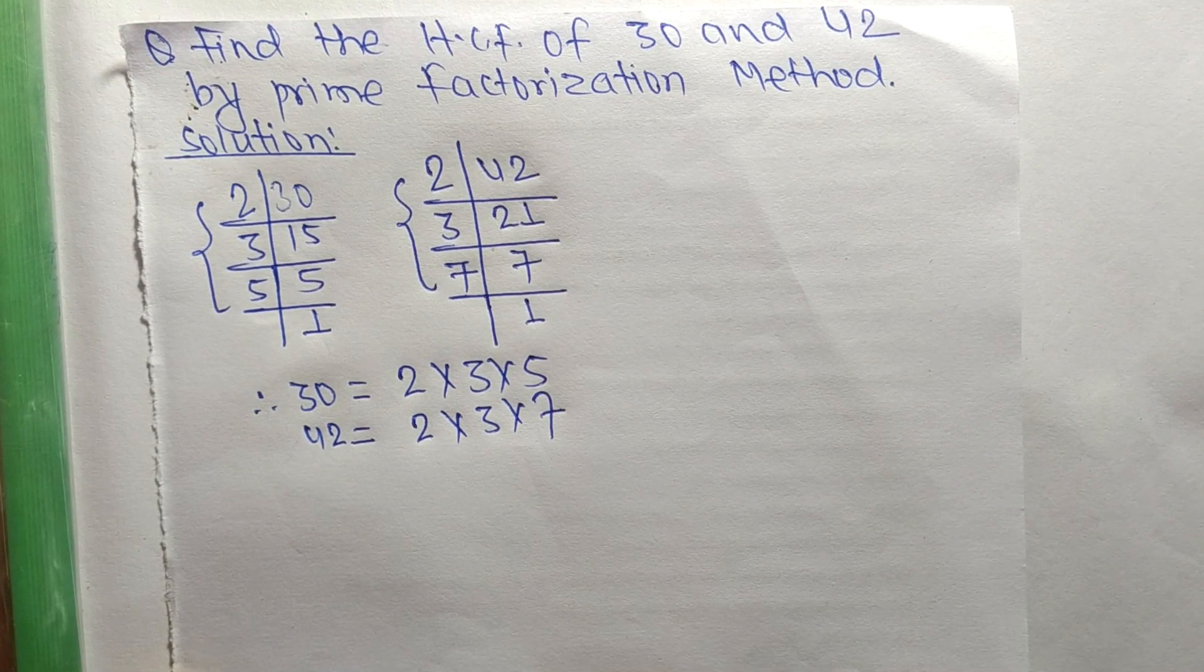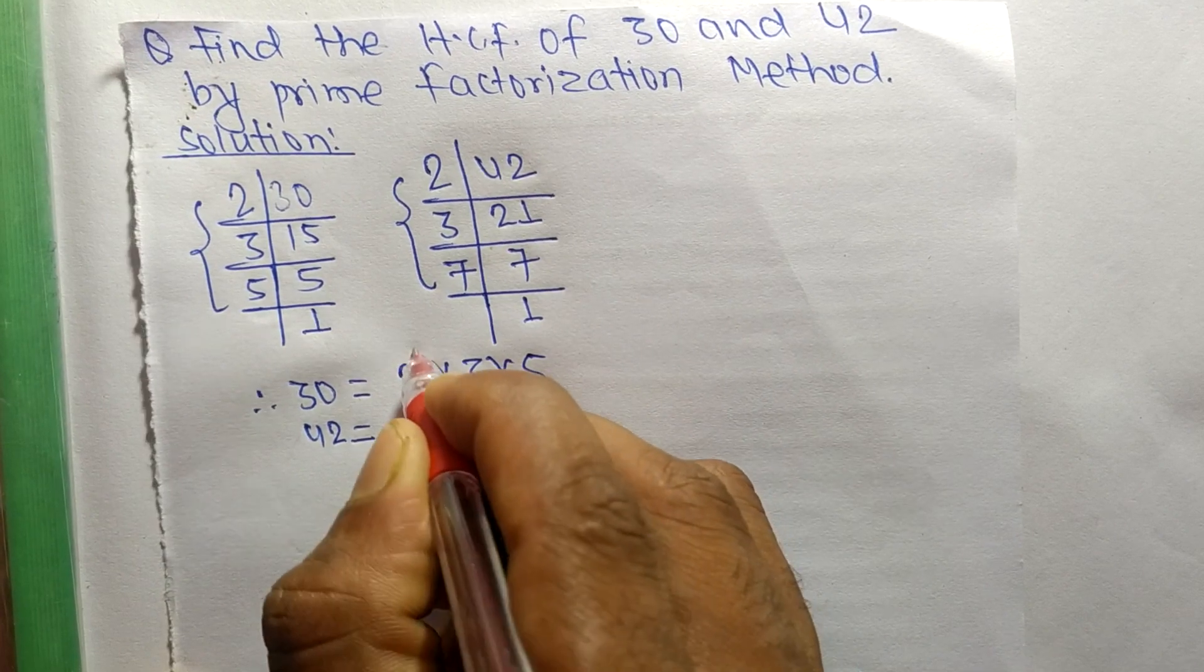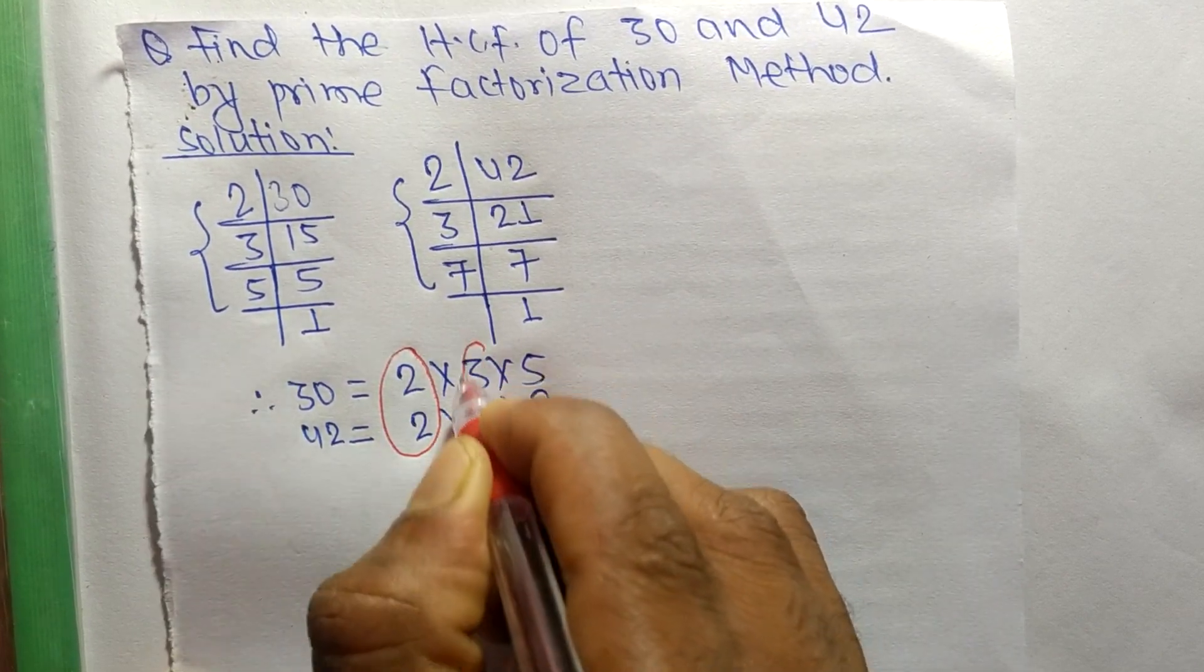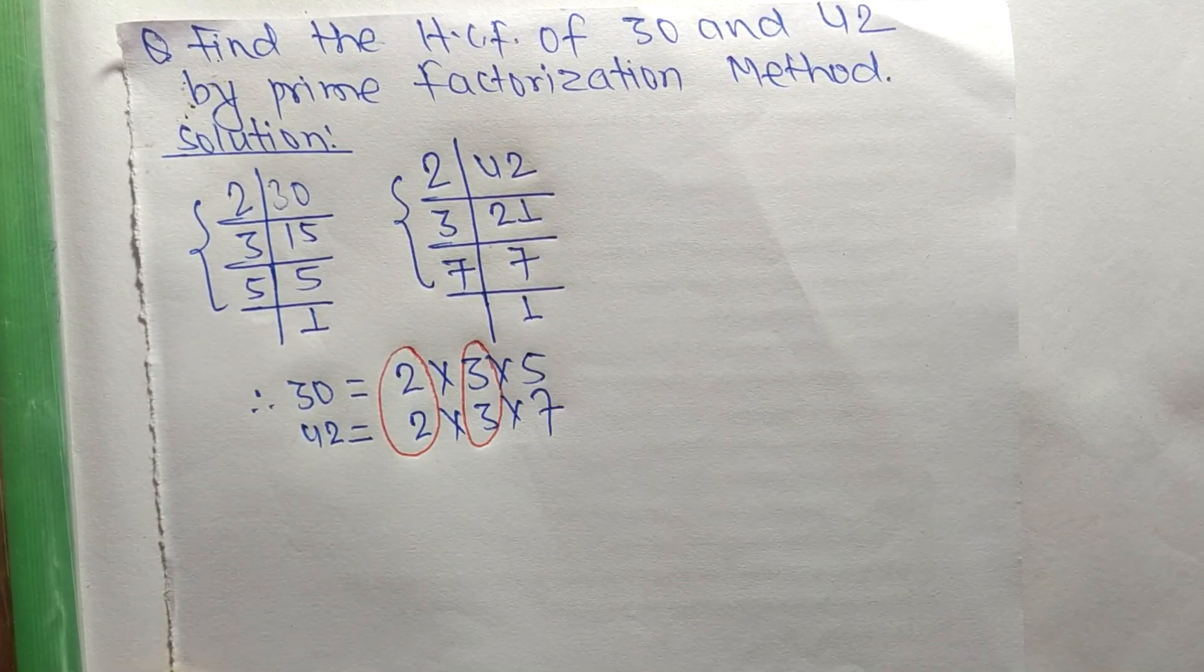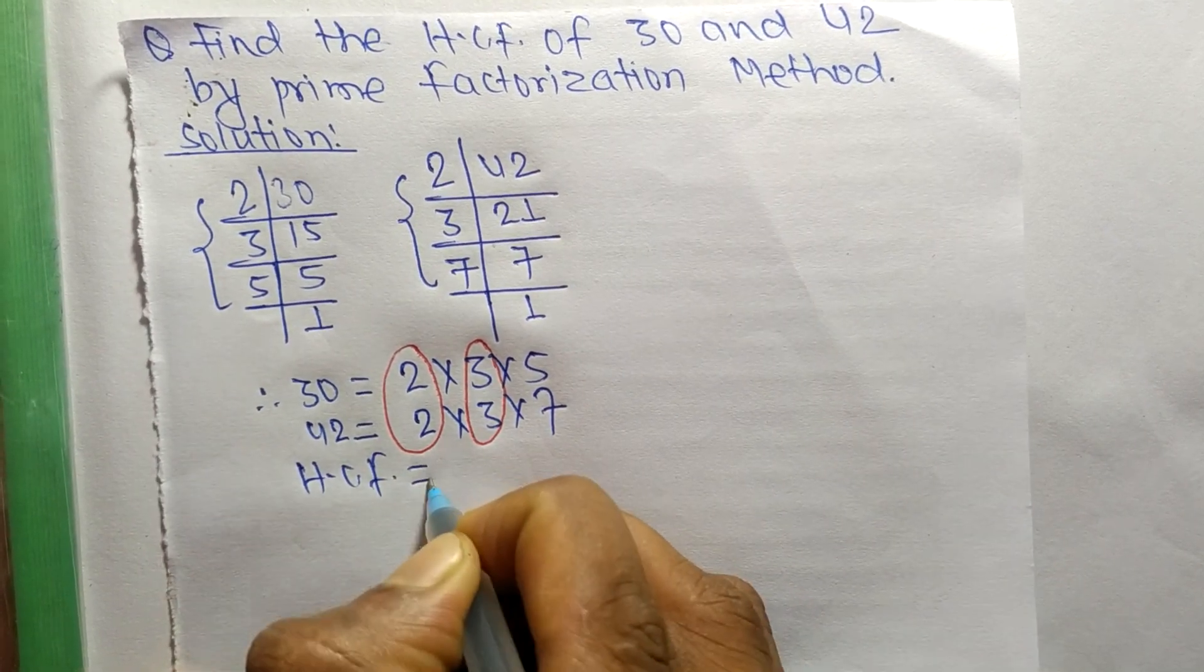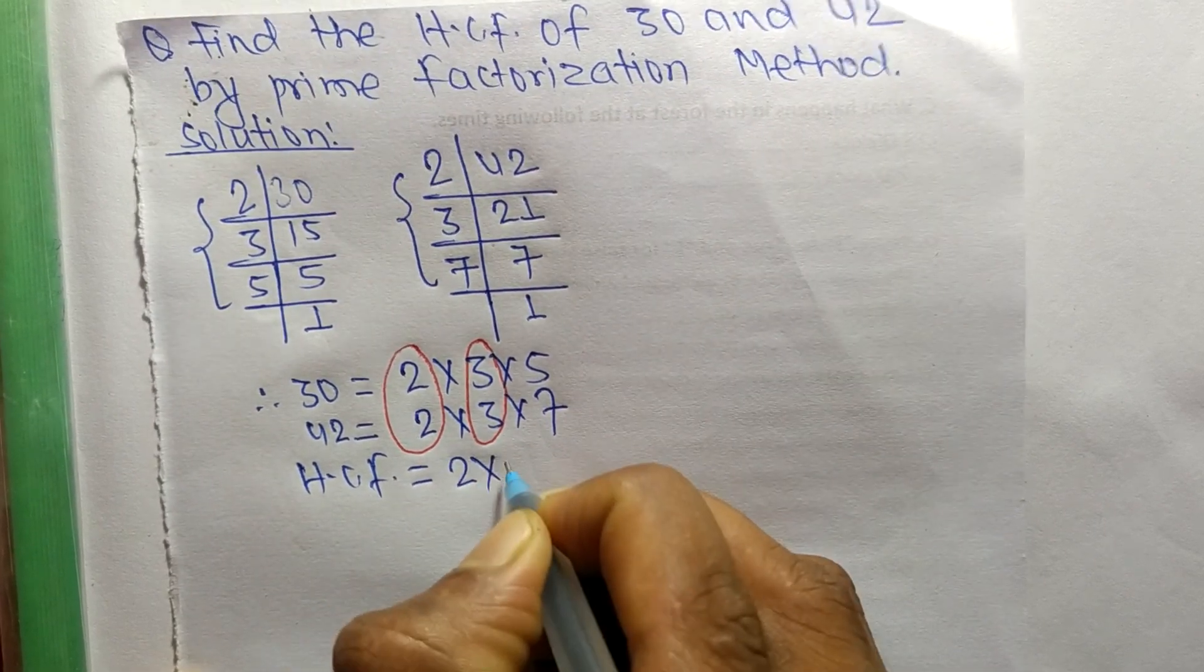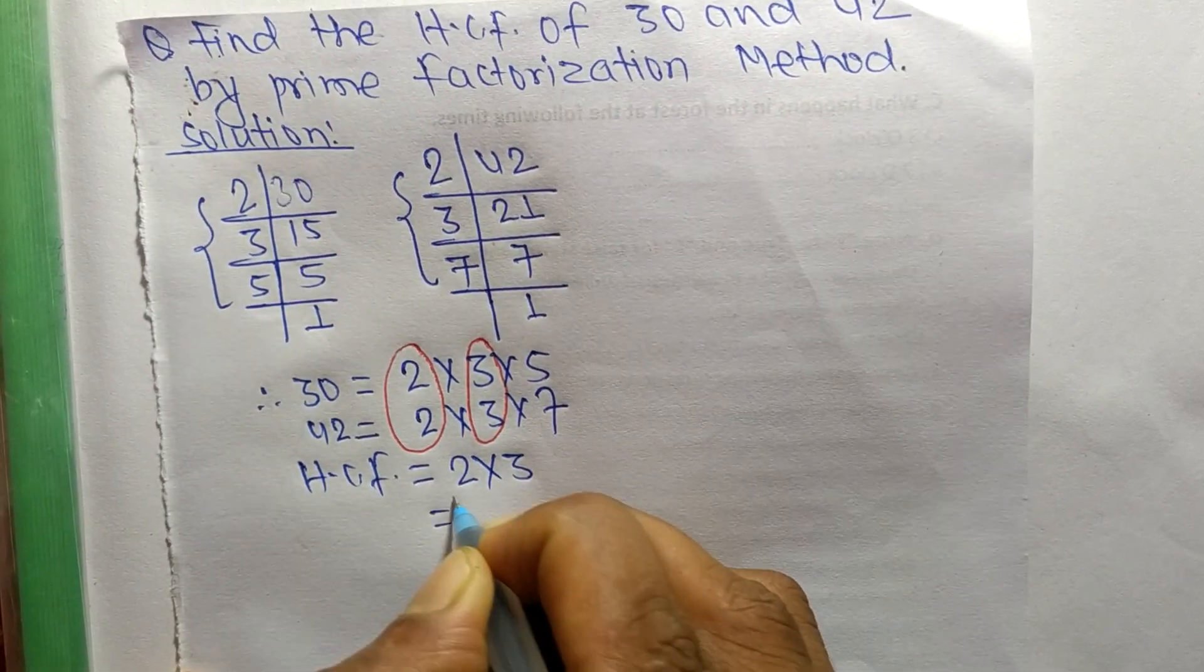find out common factors in the prime factors of 30 and 42. So the common here is 2 and the second common is 3. So the HCF is equal to the product of common factors which is 2 and 3. So 2 times 3 means 6.